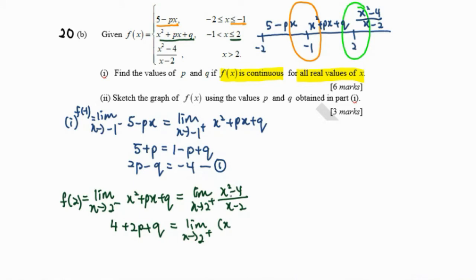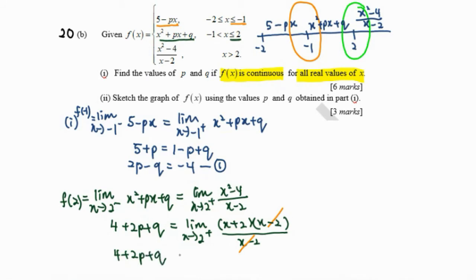We factorize x squared minus 4 as (x plus 2)(x minus 2). The factor (x minus 2) cancels, and substituting x equals 2 gives 4. Therefore the equation becomes 4 plus 2p plus q equals 4, which simplifies to 2p plus q equals 0, our second equation.